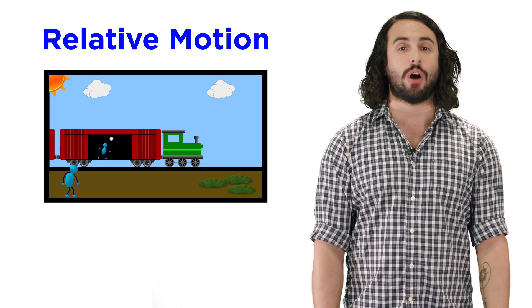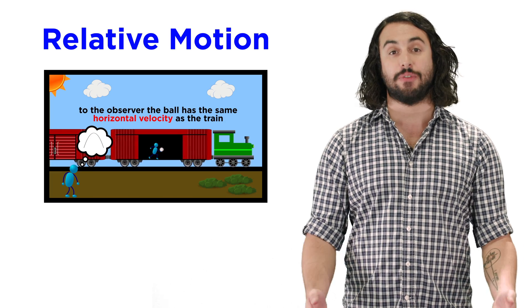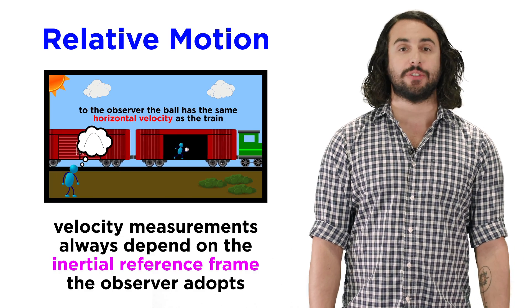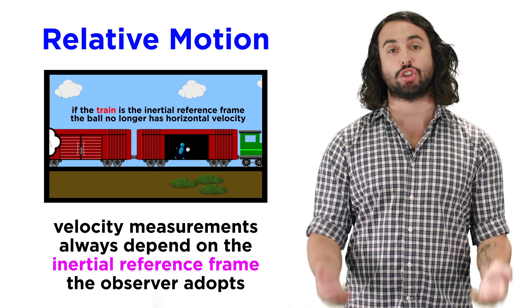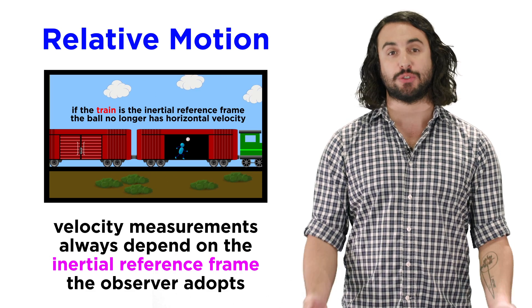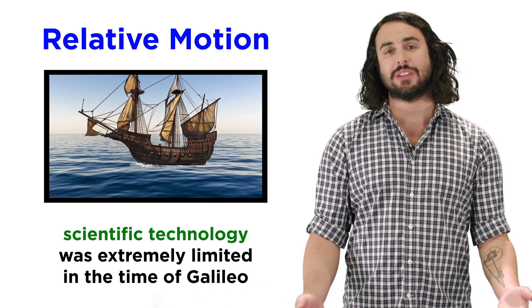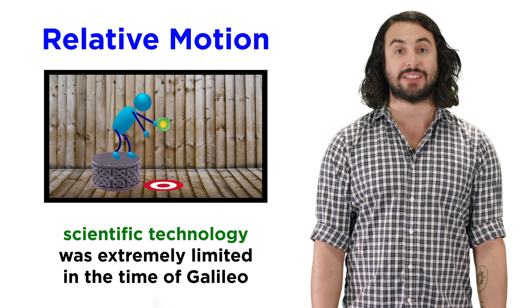To answer this, let's recall that in classical physics we learned about relative motion. Galileo developed the concept of an inertial reference frame, stating that measurements of velocity depend on the reference frame you adopt, but given that it was the 17th century there were limitations as to the experiments he could perform.